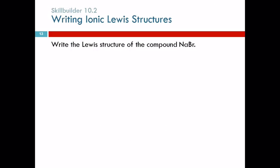Let's write the Lewis structure for the compound NaBr. We've got Na and Br. How many valence electrons does sodium have? One — so one dot. How many does bromine have? Seven.